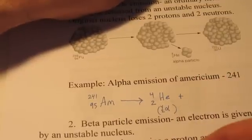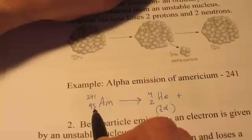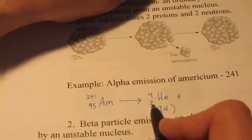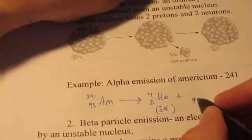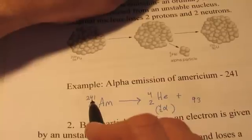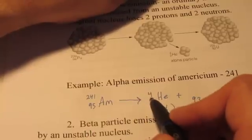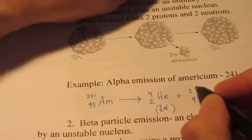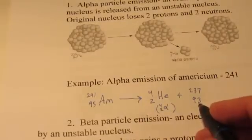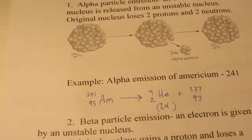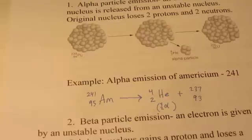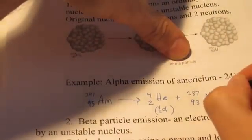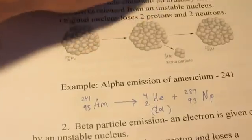What's the other product nucleus? Well, let's see. We started with 95 protons. Two of them were ejected, so we're down to 93. The mass started out to be 241. We lost two protons and two neutrons, so a mass of 4. So now we drop to an atomic mass of 237. What element has the atomic number of 93? Well, if we look on our periodic table, we can find atomic number 93. And that is neptunium, Np.